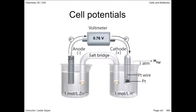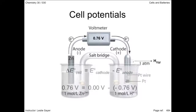In this voltaic cell, the zinc electrode is being oxidized and the hydrogen ions are being reduced at the platinum electrode, releasing hydrogen gas. The half-cell potentials from your data book enable you to calculate the voltage of the cell, and using hydrogen as one of the half-cells makes this relatively straightforward.